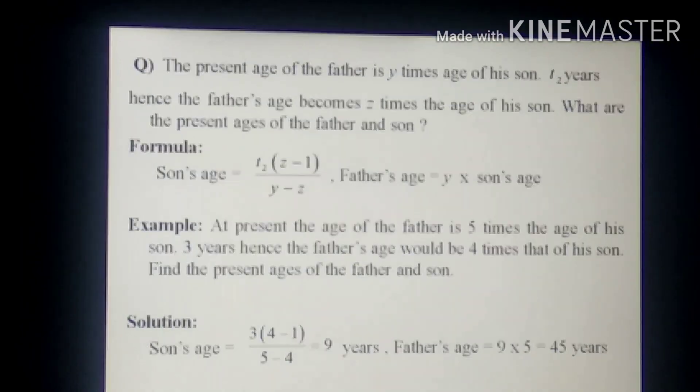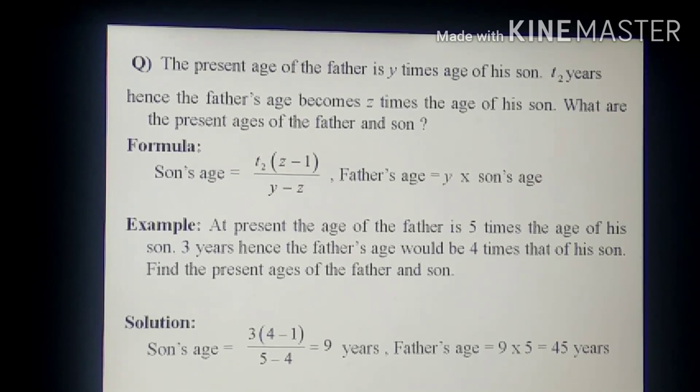So let's give an example. At present the age of the father is 5 times that of his son's age. 3 years hence the father's age would be 4 times that of his son. Find the present ages of the father and son.